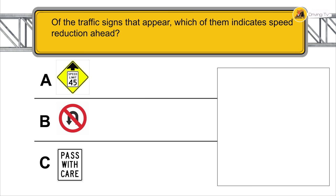Of the traffic signs that appear, which of them indicates a speed reduction ahead?